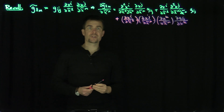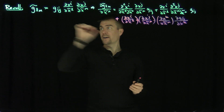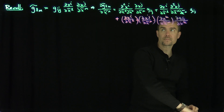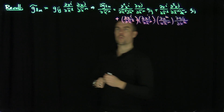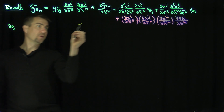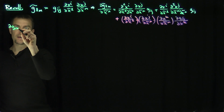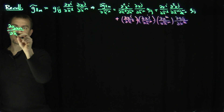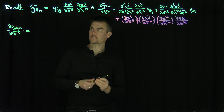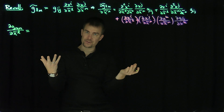Now I'm going to cyclically permute these indices two more times to find a relationship between the lower Christoffel symbols. So I'm going to use the same formula and just shift the indices around carefully.